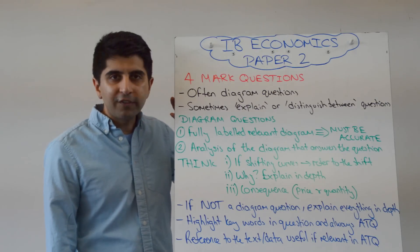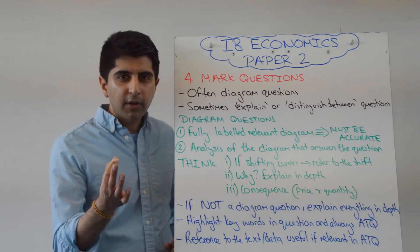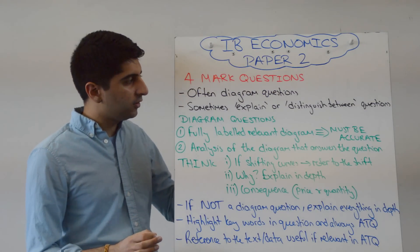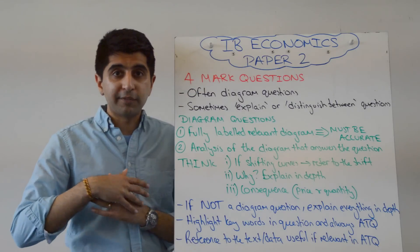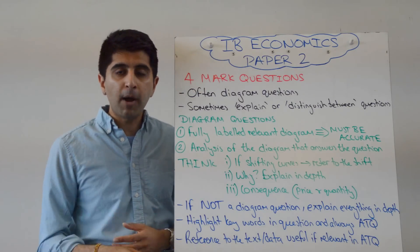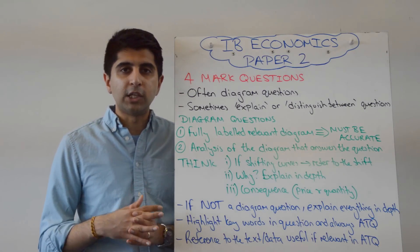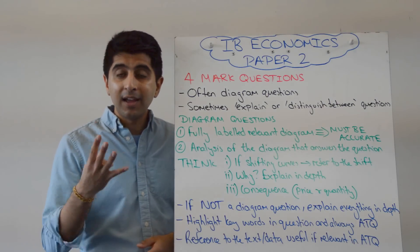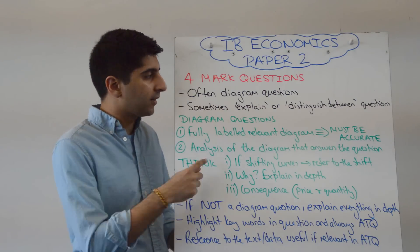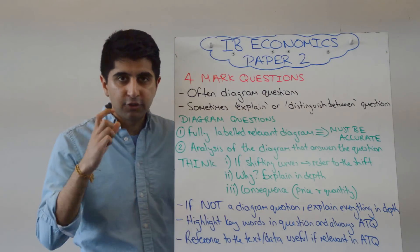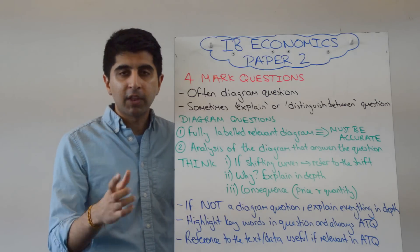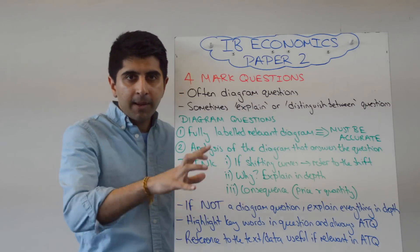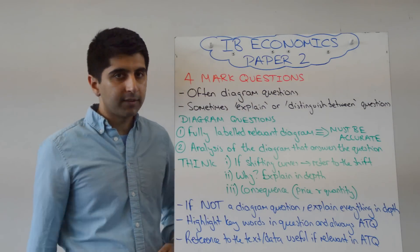These four markers are often diagram questions, but not always. Some questions are explained, where you just have to write to get four marks, or distinguish between — showing that you understand the difference between two things to get four marks. So this second type is just writing for four marks, while the first is a diagram with writing.